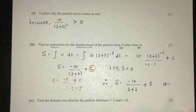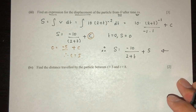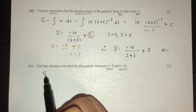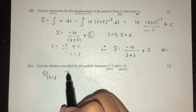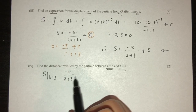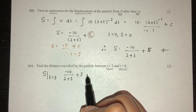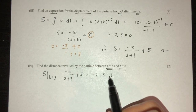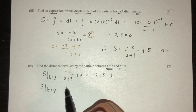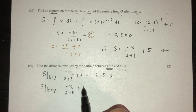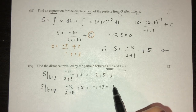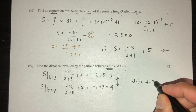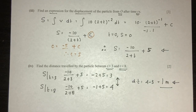For part four, find distance traveled between t = 3 and t = 8. At t = 3: s = −10/5 + 5 = −2 + 5 = 3. At t = 8: s = −10/10 + 5 = −1 + 5 = 4. Distance traveled = 4 − 3 = 1 metre. That is your answer for part four.